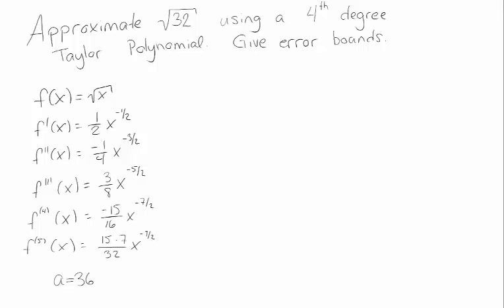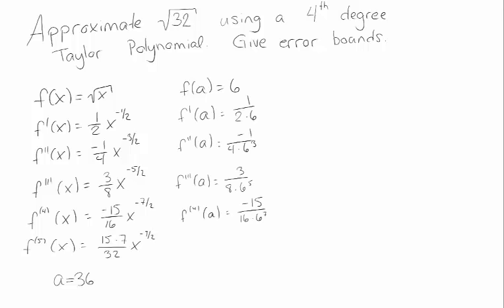Since we're taking the fourth degree Taylor polynomial, I need f through the fourth degree of f evaluated at our a, which is 36. Remember, we chose a so that we could easily evaluate these things. All of these one-half powers, that's just going to turn my 36 into a 6. So these are the first four derivatives of f at 36. The fifth derivative I'm going to be using for my error approximation, so I don't need to plug in 6 to that one.